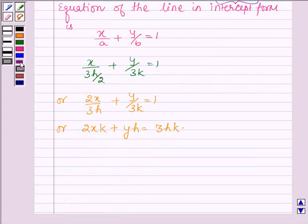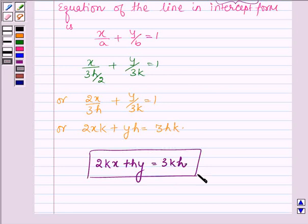Thus the equation of the line is given by 2kx plus hy equals 3kh. So this is our answer. Hope you have understood it. Take care and have a good day.